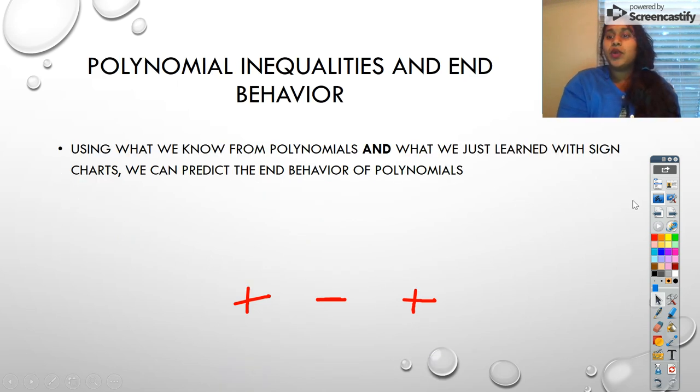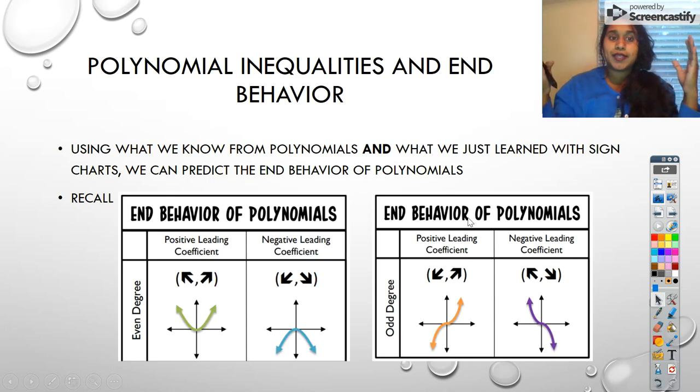What about the end behaviors of our polynomials, though? I mentioned it briefly, but I want to showcase what that looks like. We memorized some concept. We said that if they were even, we had the same arms. If they're odd, we had opposite arms. And you know that if they're positive, for an even, we're going to be up. If we're negative, for an even, we're going to be down. If we're positive, for an odd, we're going to start down and end up. If we are negative, for an odd, we're going to start up and end down.